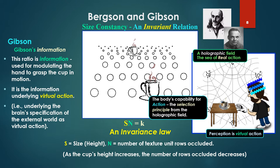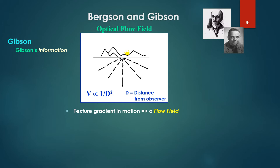Remember, Bergson's principle of perception is virtual action, or selecting information from the sea of real actions in the holographic field and it's being specified as virtual action. Again, the body's capabilities of action being the selection principle from the holographic field. So this law is underlying the brain specification of the external world as virtual action. For example, by moving the cup back or forth, backward or forward on the table, my ability to grasp the cup as it's moving is going to be a function of resonance to that law, that constancy being specified.